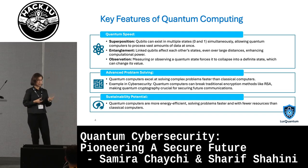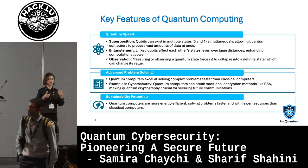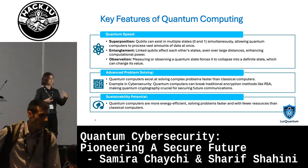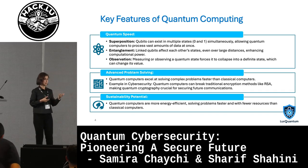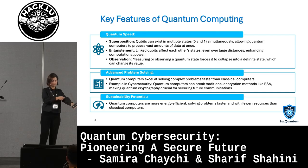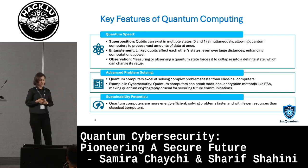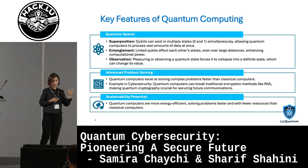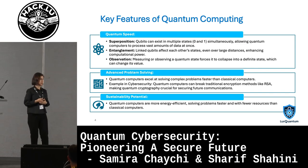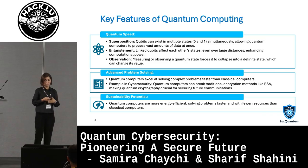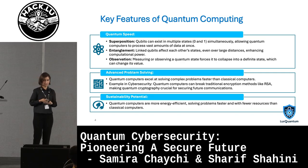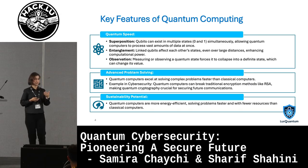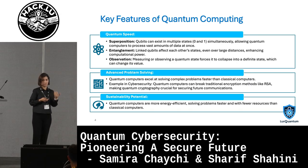And observation: measuring and observing the state of a quantum system changes its value. For example, if you read the data, the data is going to be changed. That's the reason they can detect eavesdropping — if somebody reads your data, it will be known. Based on these features, the quantum computer can solve complex problems, such as breaking traditional cryptographic methods in cybersecurity.